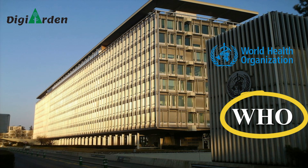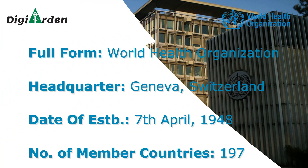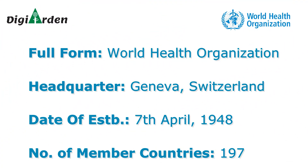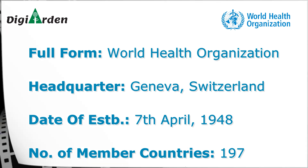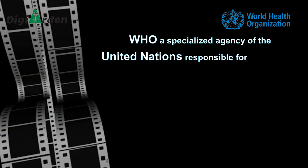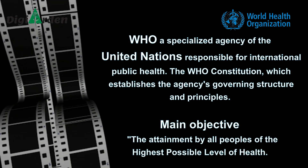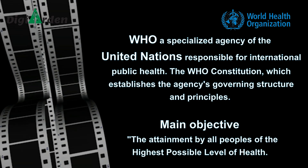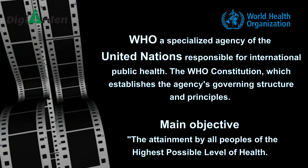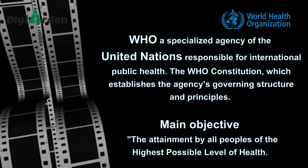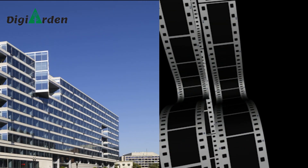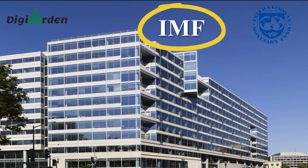Fifth one is WHO. Nowadays we often hear this word, especially after COVID-19. The full form is World Health Organization. Headquarter at Geneva, Switzerland. It was established on 7 April 1948. Number of member countries: 197. WHO is a specialized agency of the United Nations responsible for international public health. The WHO constitution establishes the agency's governing structure and principles. Its main objective is to attain by all people the highest possible level of health.